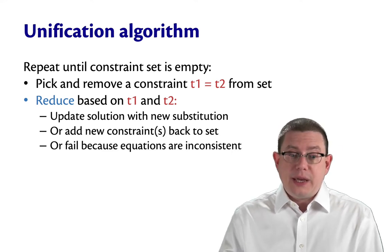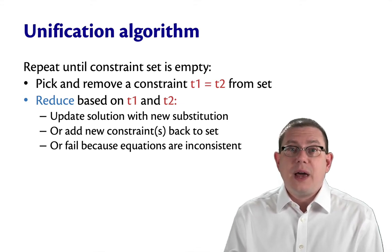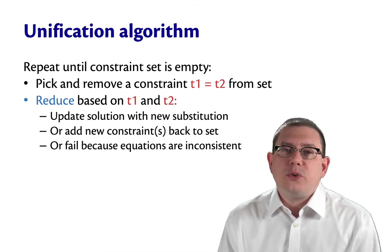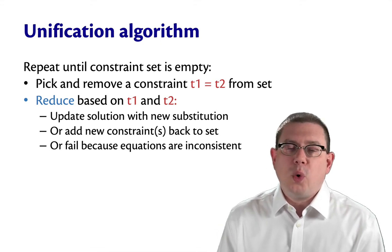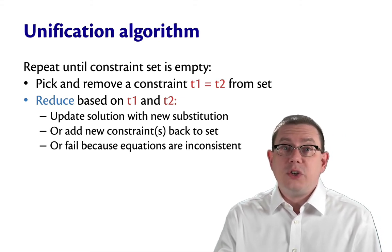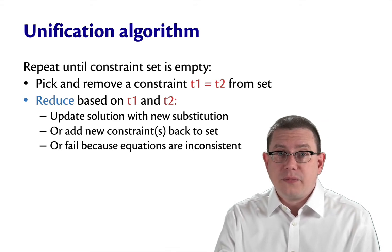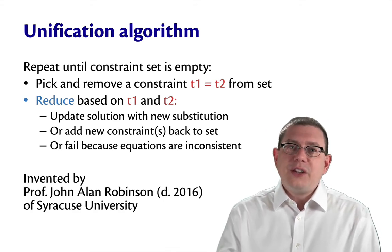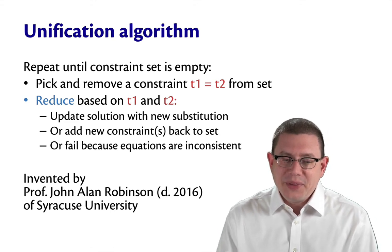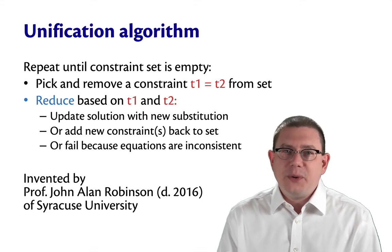A third possibility is that we fail because the equations are inconsistent. That didn't happen in our earlier example, but suppose at some point we had gotten down to an equation that said int equals bool. Of course that can't hold, so the algorithm would have to fail and say there is no solution — this system of equations is inconsistent. It turns out this unification algorithm was actually invented next door, by Professor John Allen Robinson of Syracuse University.